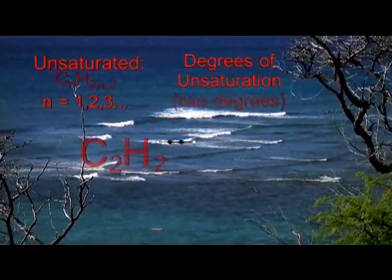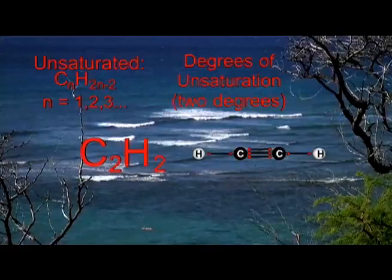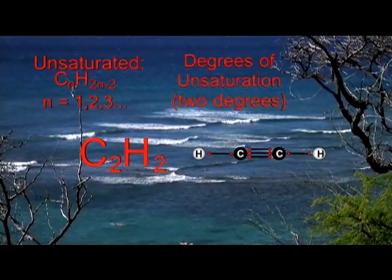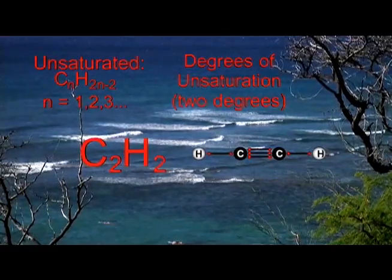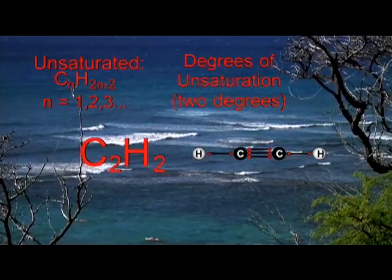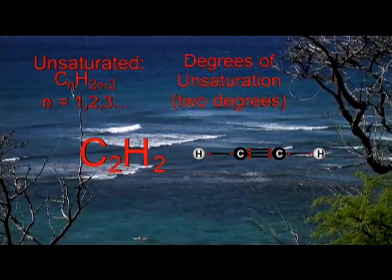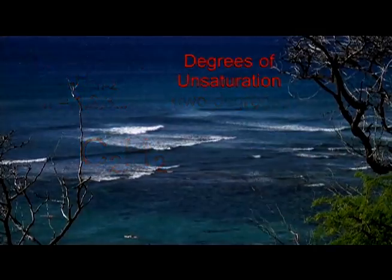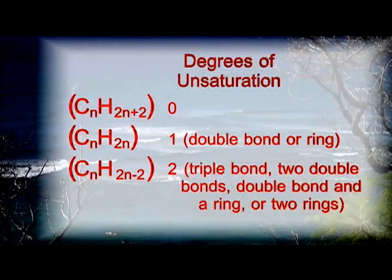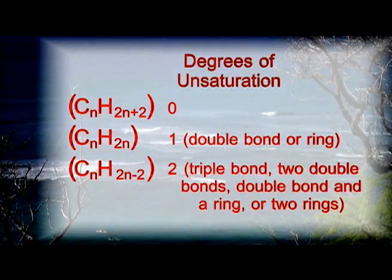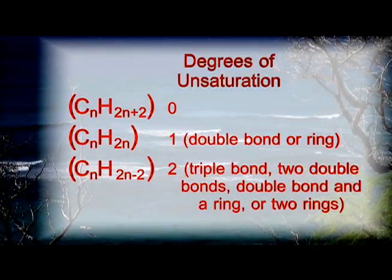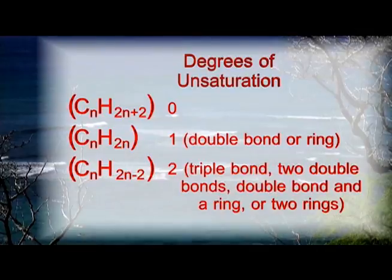The C2H2 example fits the CnH(2n-2) formula for two degrees of unsaturation. Two degrees of unsaturation are satisfied by a triple bond, two double bonds, a double bond and a ring, or two rings. Looking down the general formula column, we see that each time a degree of unsaturation is introduced, two fewer hydrogen atoms are present. Calculating degrees of unsaturation for a given molecular formula helps us develop a logical plan before drawing Lewis structures.